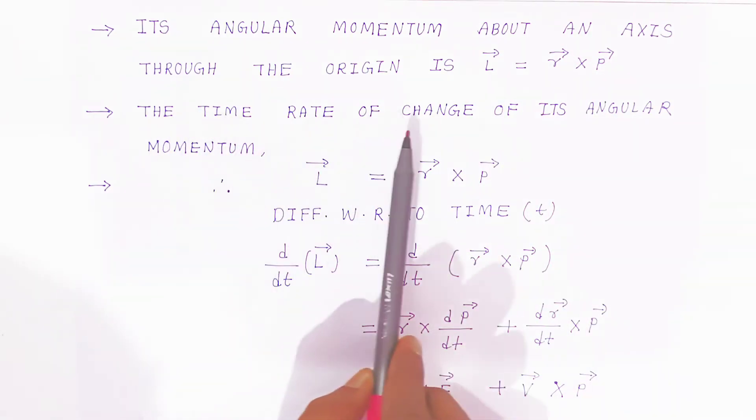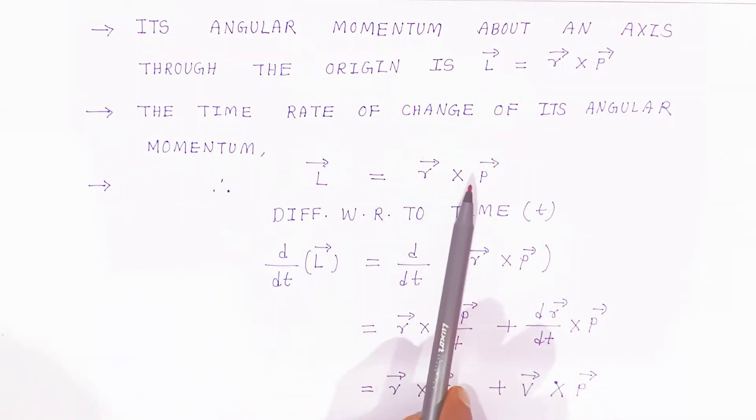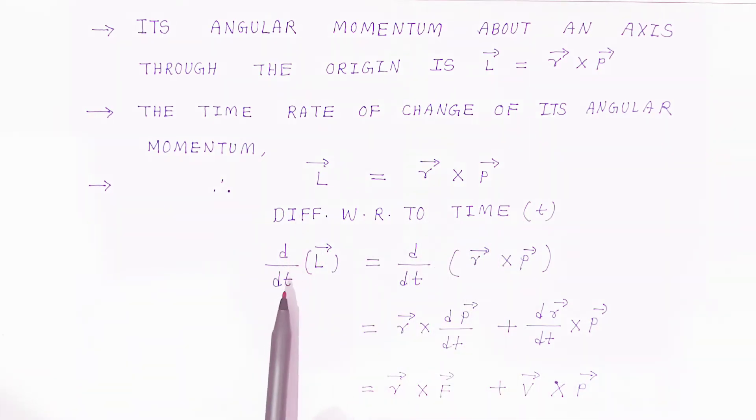The time rate of change of its angular momentum - if you are going to differentiate this expression L bar equals r bar cross p bar - we are going to differentiate with respect to time. So d upon dt of L bar equals d upon dt of r bar cross p bar. Now this is expression in u into v form.